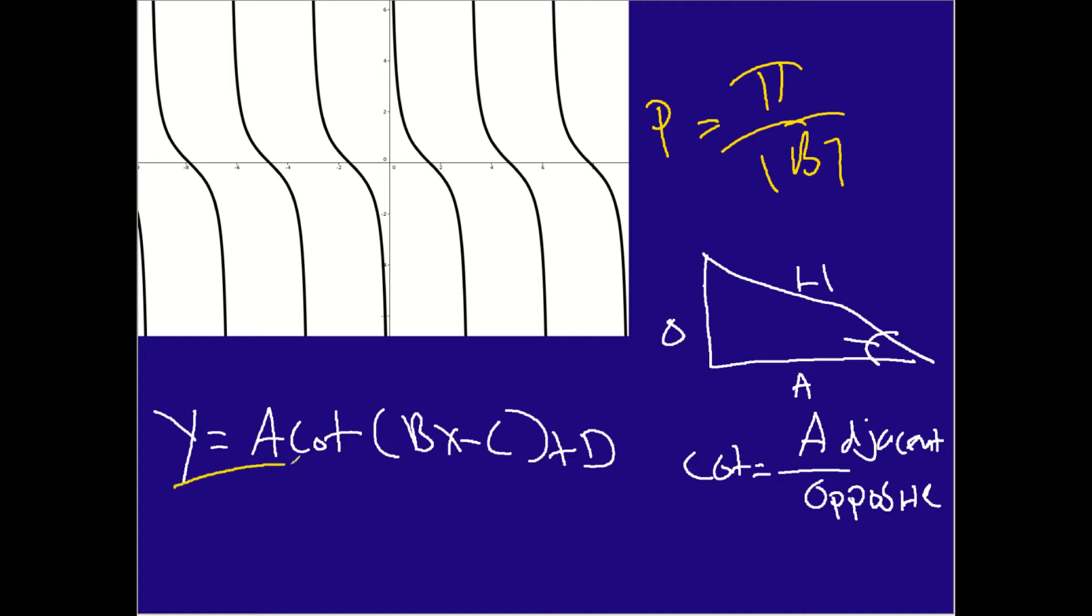The actual function, or the actual equation, if you will, is right here below. So you have a cotangent times the quantity of b times x minus c plus d. And so we've talked about this before. The a kind of represents the stretching factor. And then you have the actual cotangent function here. Then you have your b, which is used to calculate the period, whether it's stretched or compressed as well. The c is the phase shift going from the left to the right. And the d kind of affects the vertical up and down a bit.